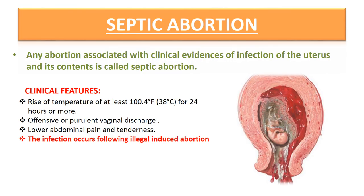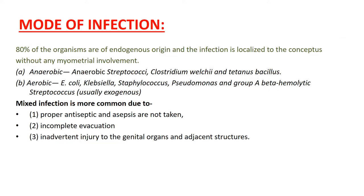Septic abortion is any abortion associated with clinical evidence of infection of the uterus and its contents. Clinical manifestations include fever for 24 hours or more, offensive or purulent vaginal discharge, and lower abdominal pain and tenderness. Most septic abortions occur following illegal induced abortions. The microorganisms involved are usually endogenous. Anaerobic organisms include streptococci, Clostridium welchii, and tetanus bacillus. Aerobic organisms include E. coli, Klebsiella, Staphylococcus, Pseudomonas, and group A beta-hemolytic streptococcus.